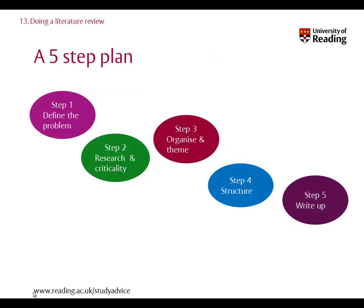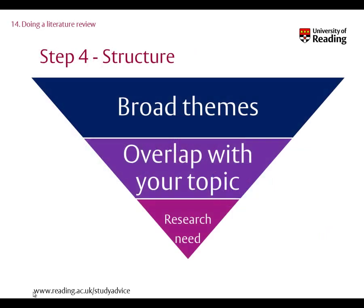Step 4: Structure. Now you have your main themes for your literature review, you may need to decide on your structure. One way to approach this would be to start with the broader themes and move to those that overlap more closely with your study, hence providing evidence for the need for your research.